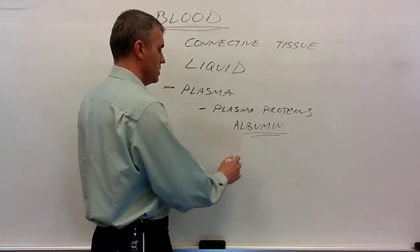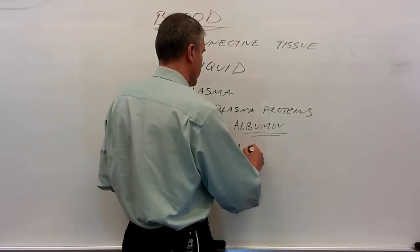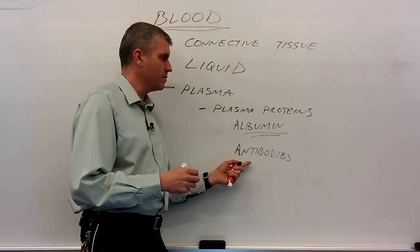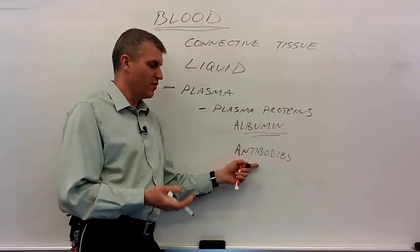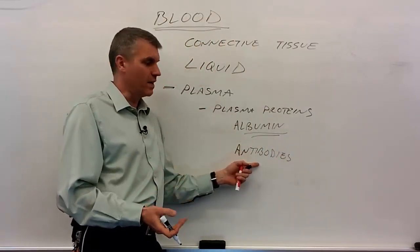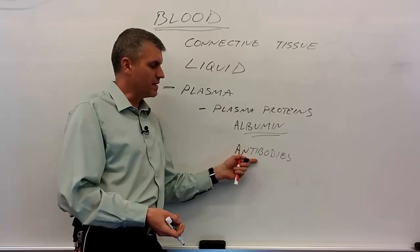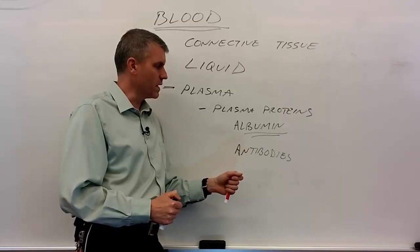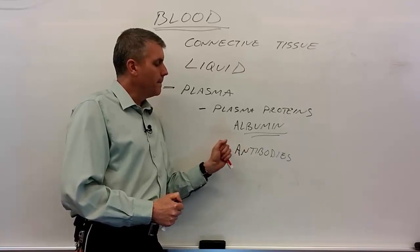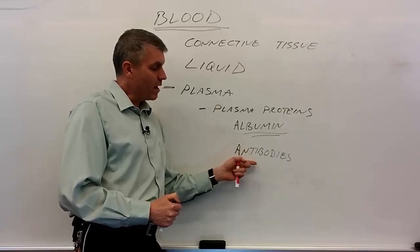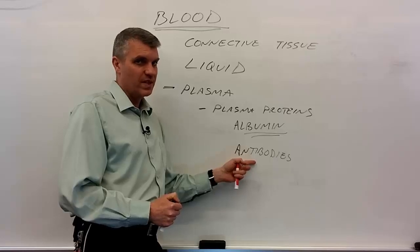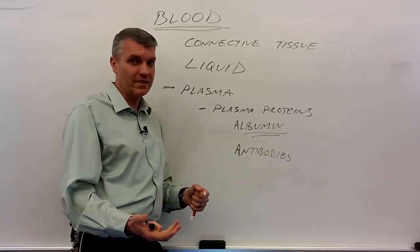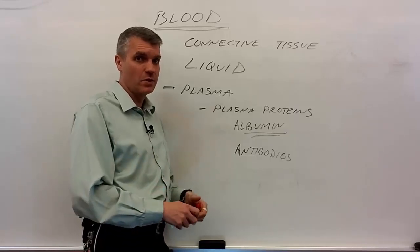Other plasma proteins include antibodies. We find antibodies in blood plasma — they're for body defense, binding to foreign pathogens and ultimately causing their destruction. Antibodies are the only plasma protein not made by the liver, which gives you an idea of how hugely important the liver is to good, healthy, functioning blood.